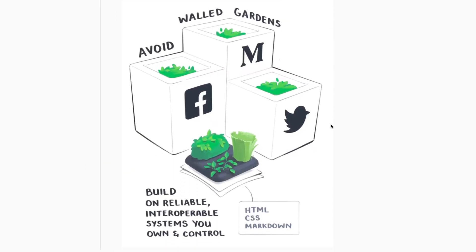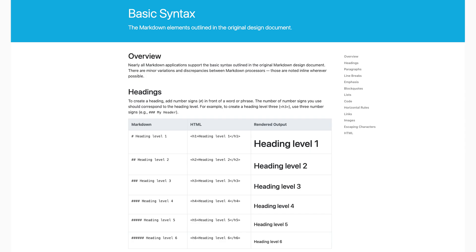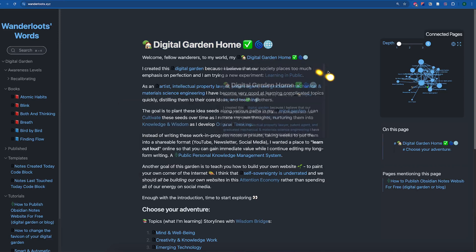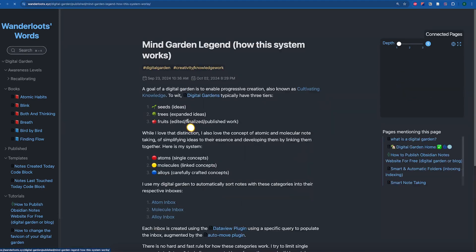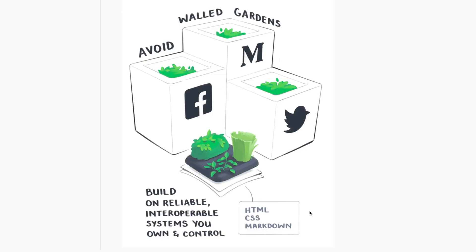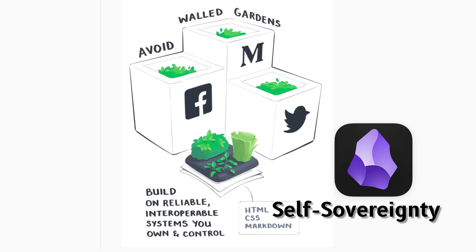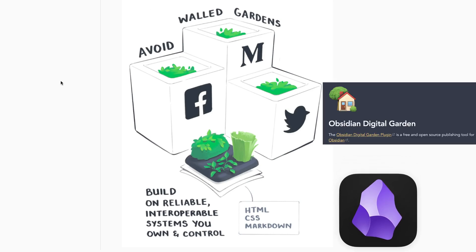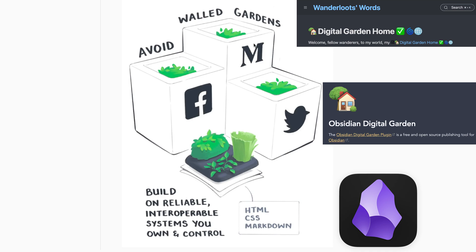Another benefit of building a digital garden using Obsidian is that it operates in Markdown. Markdown is effectively as simple a writing format as possible, and it's completely interoperable with every system on the internet. If you were building your digital garden on Twitter, Facebook, or Instagram, you'd be building on another platform's property — and if they changed the format, there's no way to export all that data and create your own website. Building your own website and populating it with your own writing in an interoperable, reliable system that you own and control gives you a lot of positive benefit. This is referred to as self-sovereignty, and Obsidian enables a decentralization by using Markdown files with the digital garden plugin, allowing anyone to permissionlessly produce their own website.